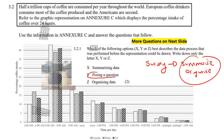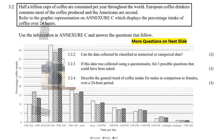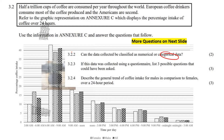The next question asks: can the data collected be classified as numerical or categorical? You can see how they've got these different categories — they're grouping them into female, males, and all. They're asking which category people fit into, and also asking them if they drink coffee in each time-slot category, and so on. So this is going to be categorical.